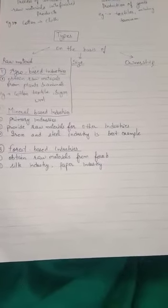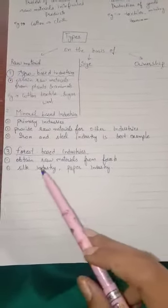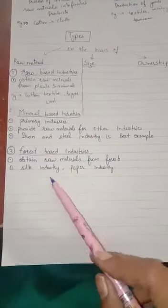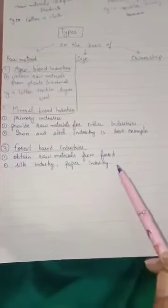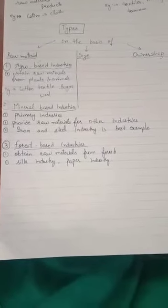Next are forest-based industries, which take their raw material from forests. Examples include the silk industry, the paper industry, and the oil industry.